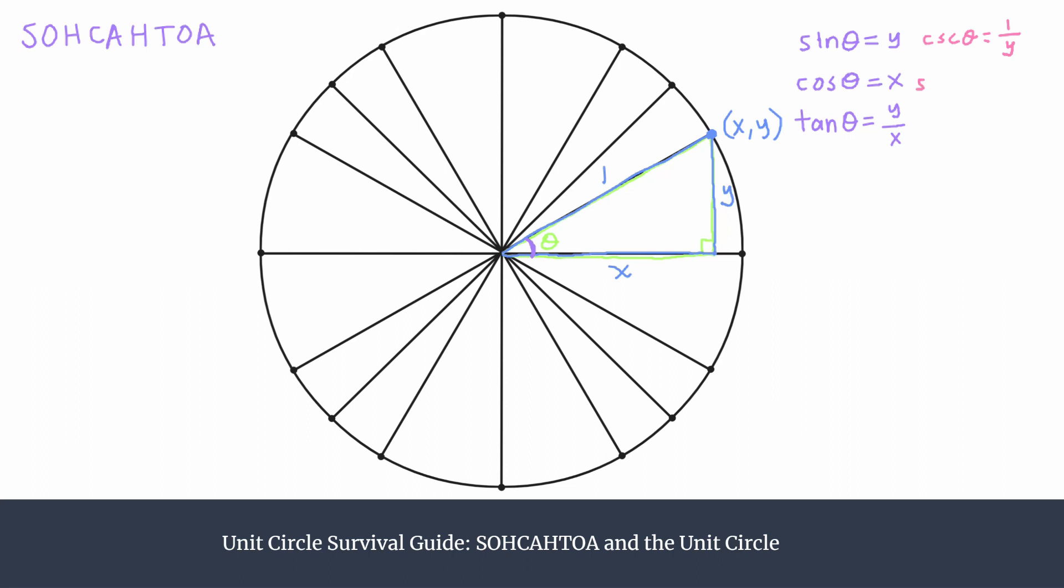Similarly with cosine, we know its reciprocal is secant, so the reciprocal ratio must be 1 over X, or the hypotenuse over the adjacent. And finally we have the cotangent ratio, so we know the cotangent must be the reciprocal of tangent, so X over Y, or the adjacent side over the opposite.